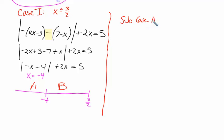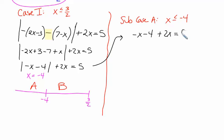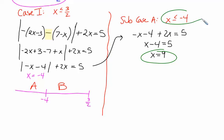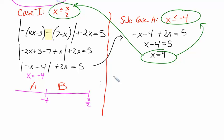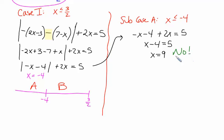Subcase a is when x is less than or equal to negative 4. Picking x equals negative 7, inside the absolute values would be positive, so we just remove those absolute value symbols. So it'll be negative x minus 4, plus 2x equals 5, giving us x equals 9. But x equals 9 does not fall in the subcase — it's not less than or equal to negative 4 — and it's not less than or equal to 3/2 either. So that would not be a valid solution.